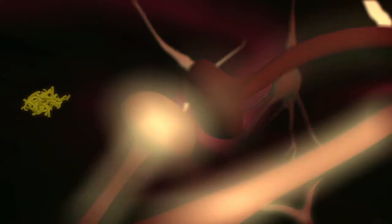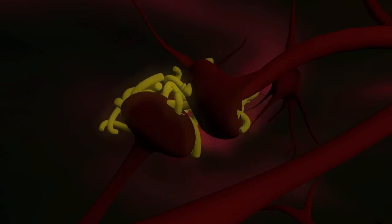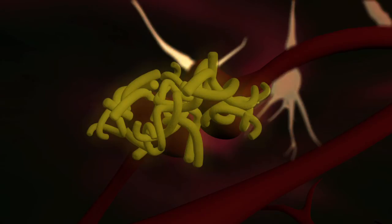A second type of abnormal structure is created by the accumulation of beta-amyloid plaques. These form when proteins in brain cells are processed differently, once again blocking communication channels.